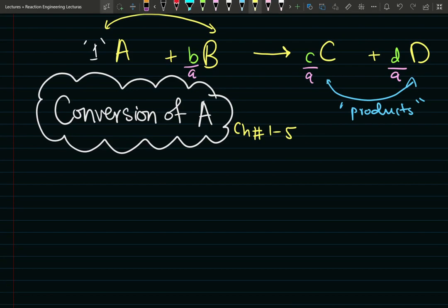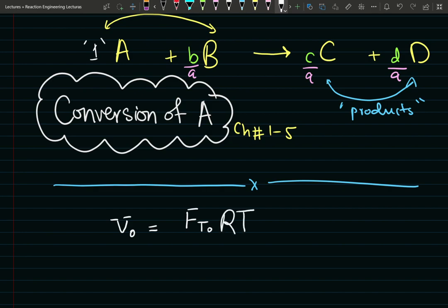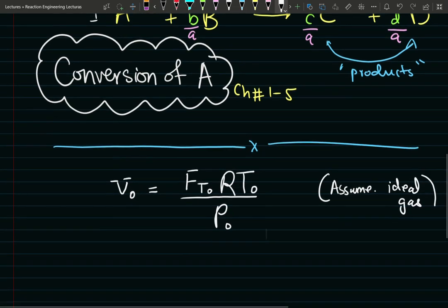Let's bring back our discussion to volumetric flow rate. For a flow reactor, the inlet volumetric flow rate is going to be equal to the inlet total molar flow rate times the ideal gas constant times the inlet temperature divided by the inlet pressure. I'm also assuming ideal gas. Those three beautiful words assume ideal gas better than I love you. I hope you guys are familiar with that.